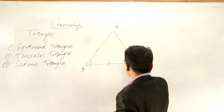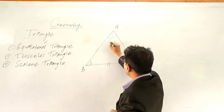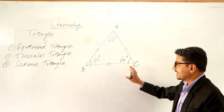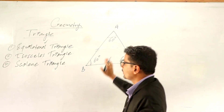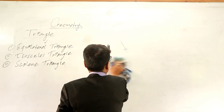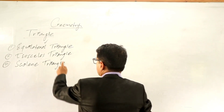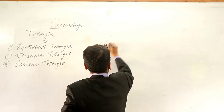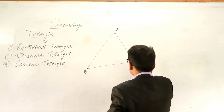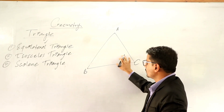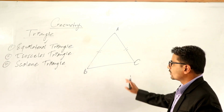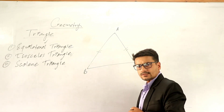In the case of an isosceles triangle, this is another triangle I have drawn: ABC. In this triangle, suppose the side AB and the side AC — these two sides are equal, then what we can say is this is an isosceles triangle.